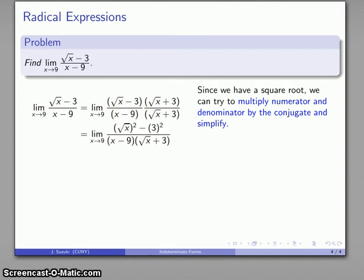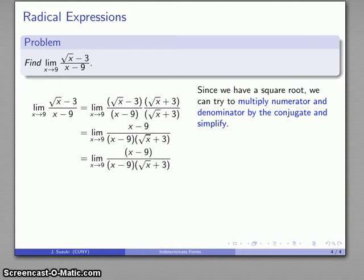That's a difference times a sum. That's going to simplify x minus 9, and good thing we didn't multiply out the denominator because those x minus 9's will cancel with each other. And we're left with this expression.